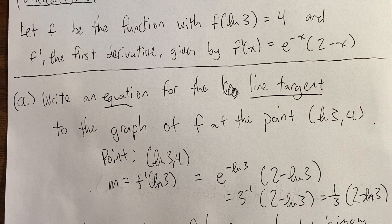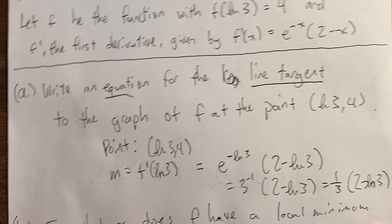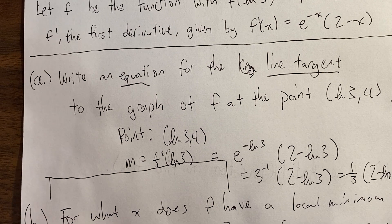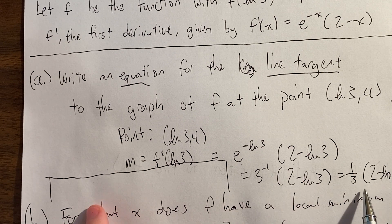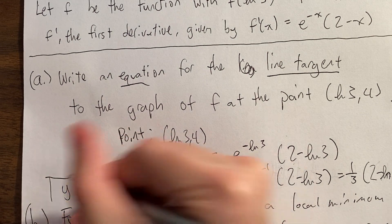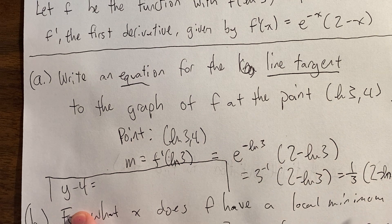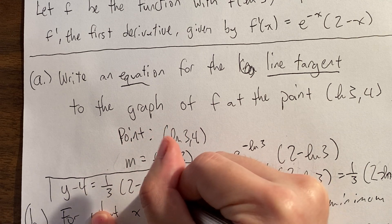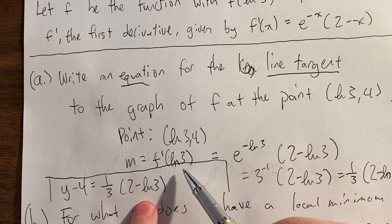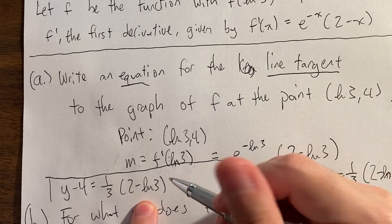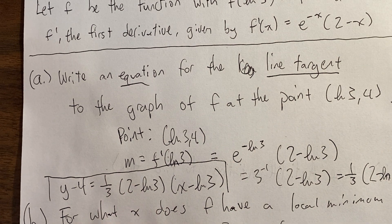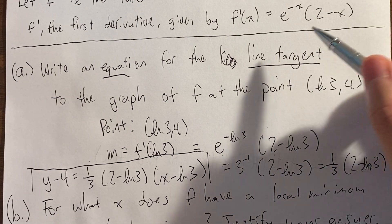With a point and a slope in hand, we write the equation in point-slope form: y minus the y-coordinate equals the slope times (x minus the x-coordinate). The slope is (1/3)(2 − ln3), which can't be simplified further, and the x-coordinate is ln(3). We didn't even have to do any calculus since the derivative was given.